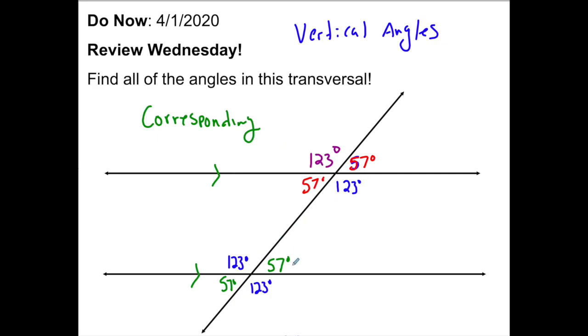Okay, so again, the green and the red, these are corresponding. We have alternating interior, interior because they're inside the lines. Alternating exterior, so this 123 and the blue 123, the red 57 and the green 57, those are alternating exterior.